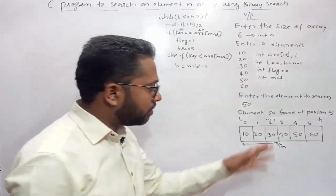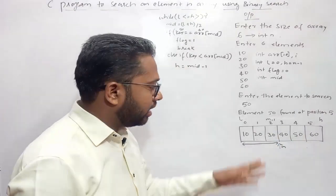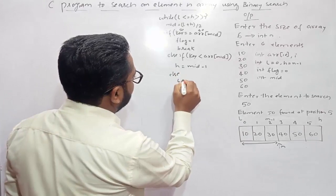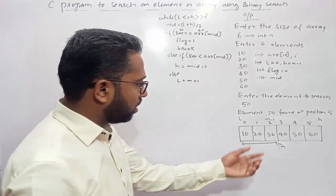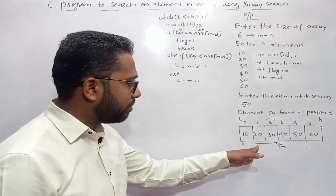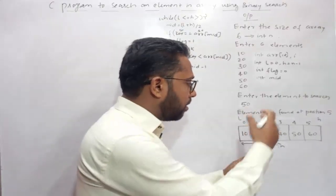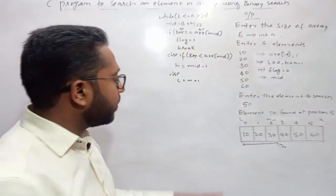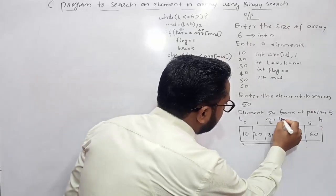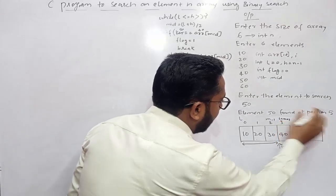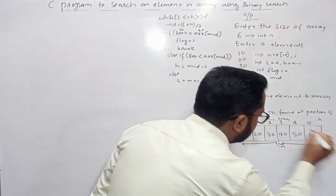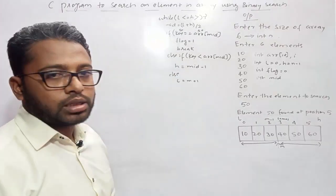If the item is present on the right side of the array, we use else: low equals mid plus 1. For this third case we don't need to write an explicit condition because if the first two didn't happen, the item must be on the right side of the middle element. We just change low to mid plus 1 and high stays as it is, then perform binary search from mid plus 1 onward.